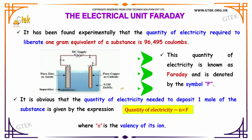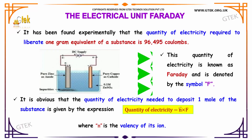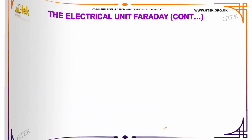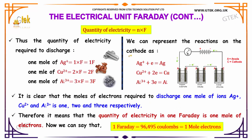The quantity of electricity needed to deposit one mole of a substance is given by the expression: quantity of electricity Q = N × F, where N indicates the valency of its ion. Thus the quantity of electricity required to discharge one mole of silver will be 1F, for one mole of copper it will be 2F, and for one mole of aluminum it will be 3F.